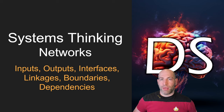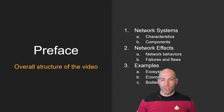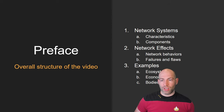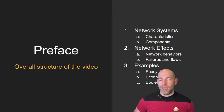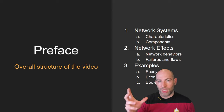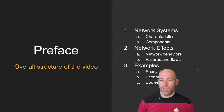Hello and welcome to my next episode of Systems Thinking where today we will cover networks. We're going to start by talking about network systems, characterize them, and discuss their components. In the second part we'll talk about network effects such as behaviors and failures of networks. Finally, we'll wrap up with real world examples so you can apply your new systems thinking tools around networks.